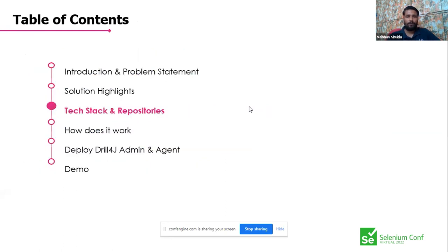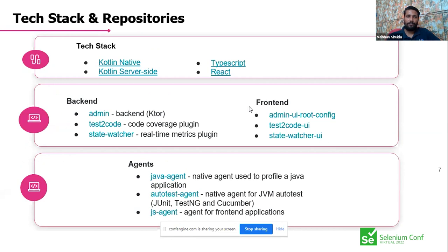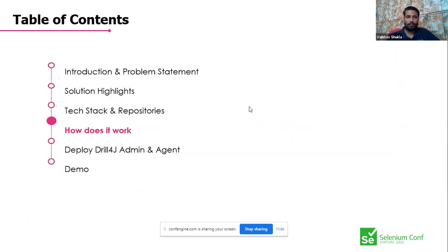Drill4J is a tool for real-time application profiling. It does not map test cases, has no dependency on unit tests, and does not affect the application code — we don't have any dependency on the application code either. On the tech stack side: TypeScript and Kotlin are used, with backend admin stat watcher, and the front-end uses a UI and some APIs.